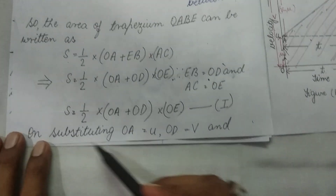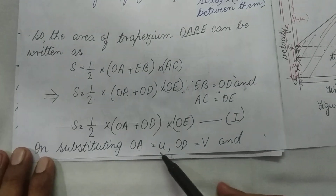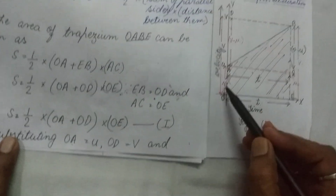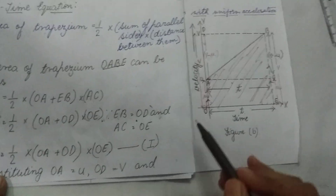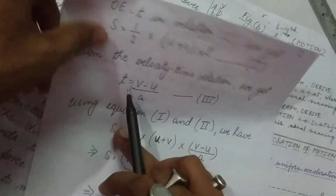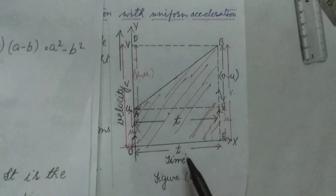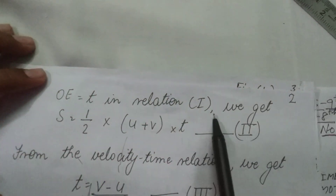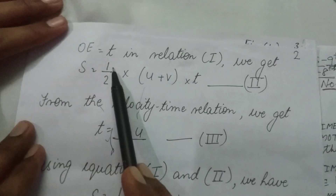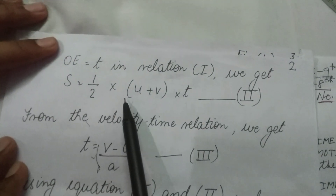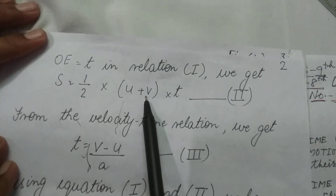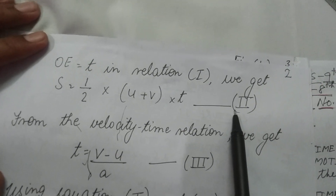Substituting OA = u, OD = v, and OE = t into the relation, we get S equals half into (u + v) into T. This is the second equation of motion.